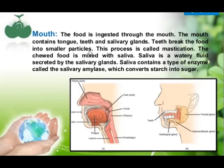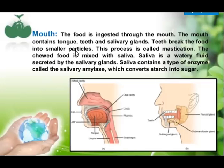Inside the buccal cavity, one more part is there — that is the tongue. Tongue manipulates the food and helps in the swallowing process, and it also mixes the saliva with the food. It helps in the mastication process. Mastication is the process by which saliva is mixed into the food and teeth break the food into smaller pieces.